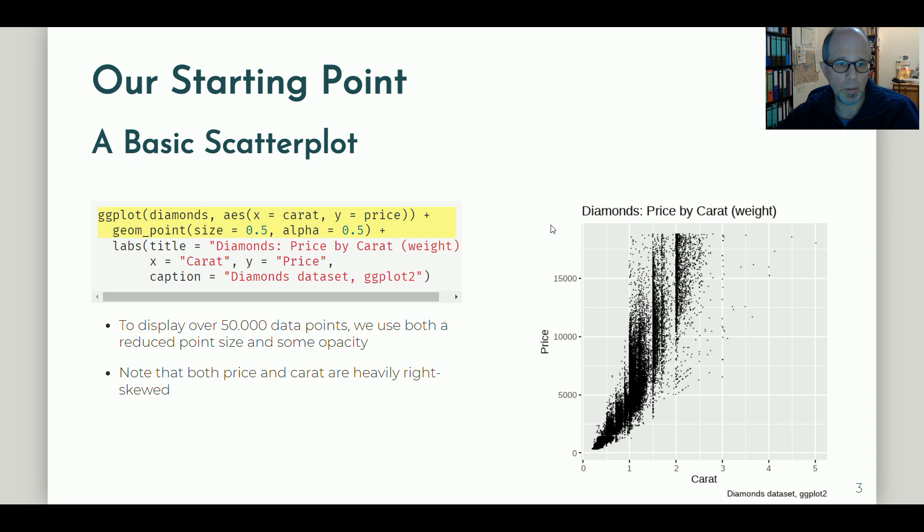To display the more than 50,000 data points here, I reduced point size using the size parameter and introduced some opacity so that we get darker and lighter areas so that we can get an idea of how many points overlap in certain plot regions. And now we want to build up on this plot.